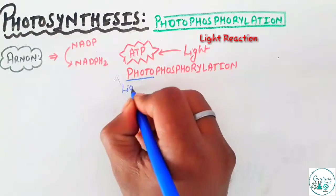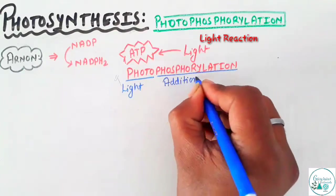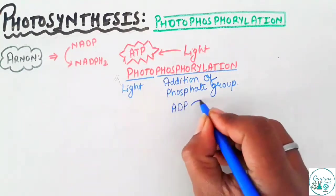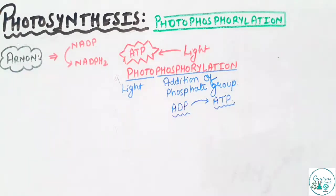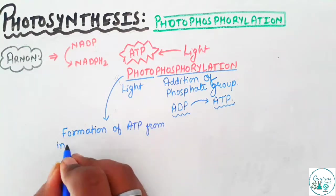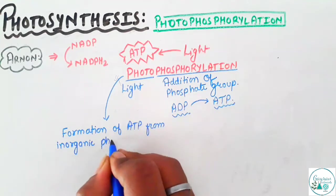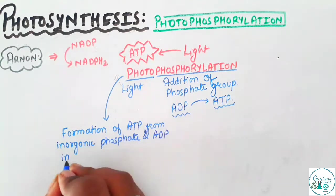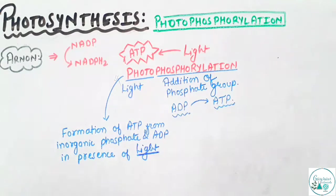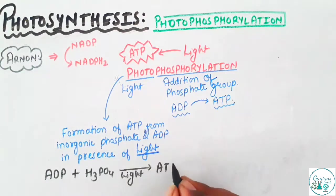If you split down the word, you get 'photo', which means light, and 'phosphorylation', which means addition of a phosphate group. If the phosphate group is added to ADP, it forms ATP. If a layman were to describe the process of photophosphorylation, it could be the formation of ATP from inorganic phosphate and ADP in the presence of sunlight. The reaction can be summed up as: ADP plus inorganic phosphate in presence of light yields ATP.